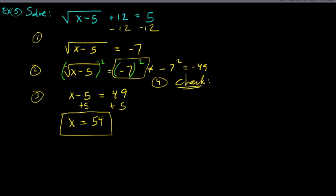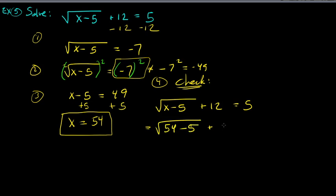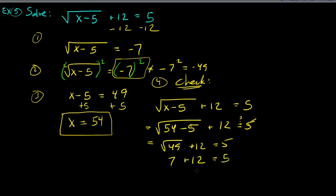Step four: check. Plug x equals 54 back into the original equation — the square root of (x minus 5) plus 12 equals 5. We get the square root of (54 minus 5), which is the square root of 49, which is 7. Then 7 plus 12 is 19. But 19 does not equal 5 — it didn't work.